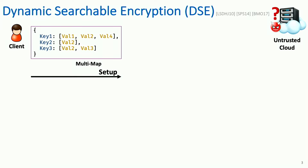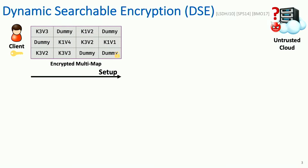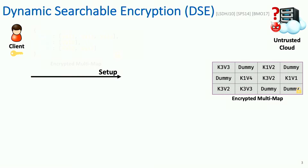In dynamic searchable encryption, it boils down to three basic protocols. The first one is setup. When you have a multi-map — a map with potentially multiple values for each key — the client wants to outsource this to an untrusted cloud. The client encrypts it in a way that obscures the cloud's view into the data, perhaps by encrypting each value and then shuffling them, and then sends it. Setup is complete.